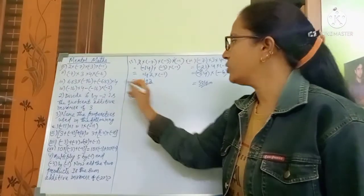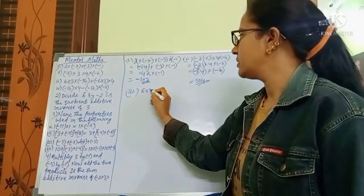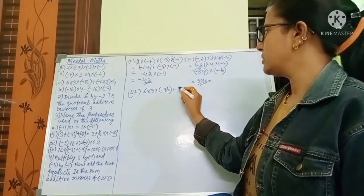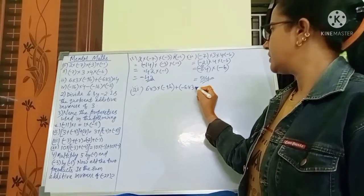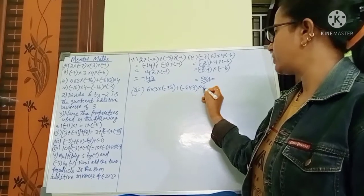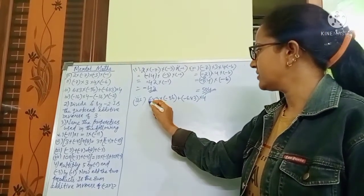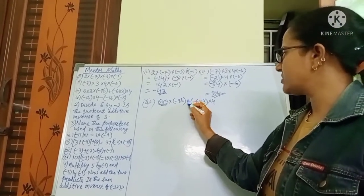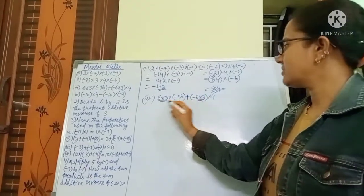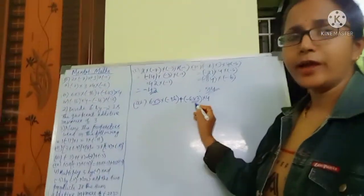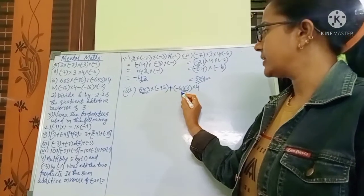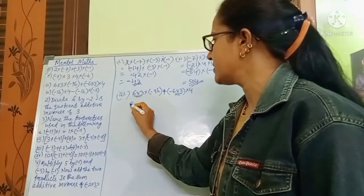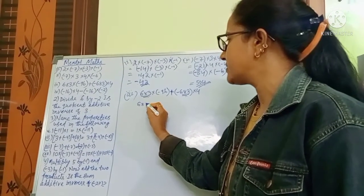The problem we will solve now is 683 into minus 96 plus minus 683 into 4. You can see that 683 is common for both parts. This type of factoring is what we have seen in the distributive property, so we can take 683 as a common number.